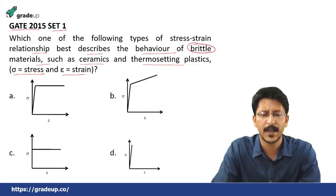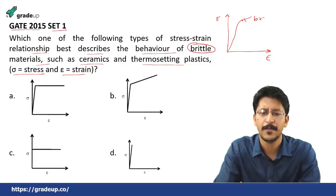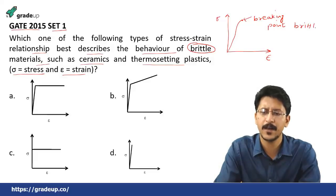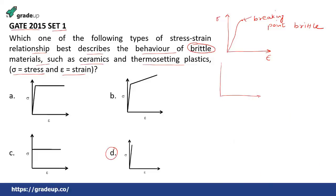For the brittle material, the stress versus strain curve goes simply somewhat linearly and then fractures at the breaking point. The correct answer is option D. For the ductile material, the stress-strain curve goes somewhat differently, but here we are talking about the brittle material, so for the brittle material the correct and most appropriate option is option D.